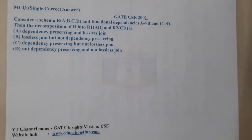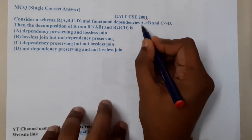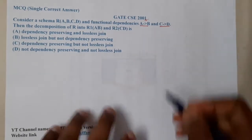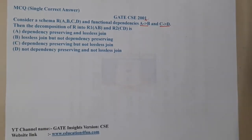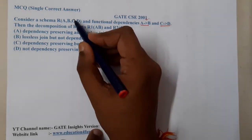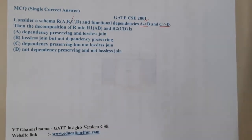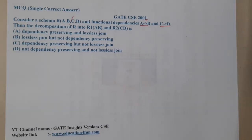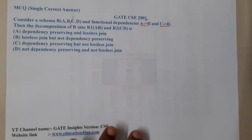Consider the schema R(A, B, C, D) and the functional dependencies A implies B and C implies D. Now they are trying to decompose or break this table into two pieces: R1(A, B) and R2(B, C).